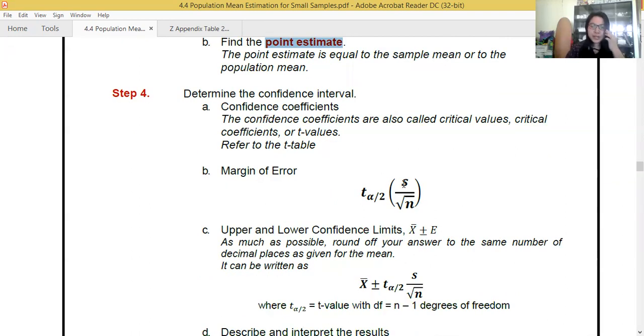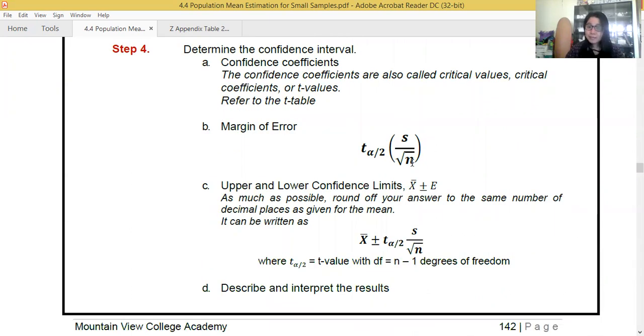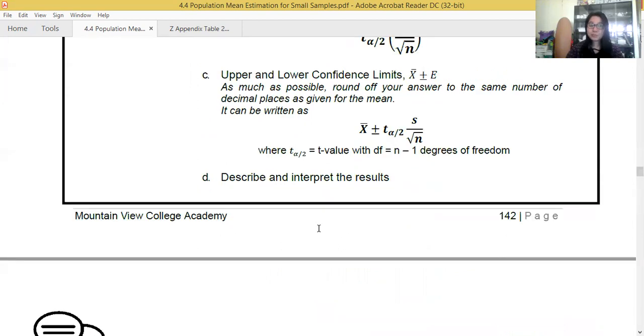For the margin of error, you need to use this formula. Then when you add the margin of error, you'll get the upper confidence limit, or some would call it upper boundary. And if you subtract it, you'll get the lower confidence limits. Then the last one, we describe and interpret the results. Let me start with problem number one.